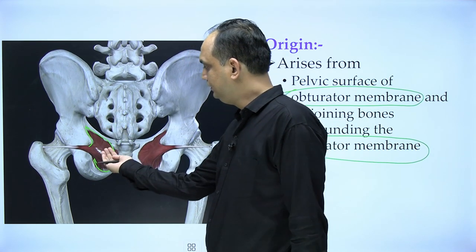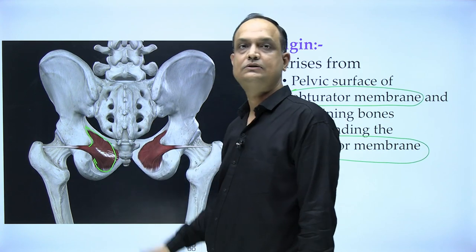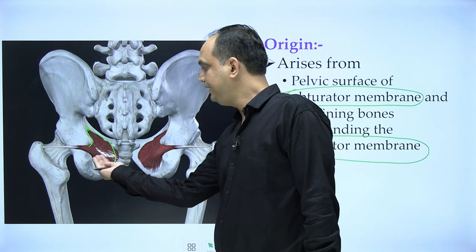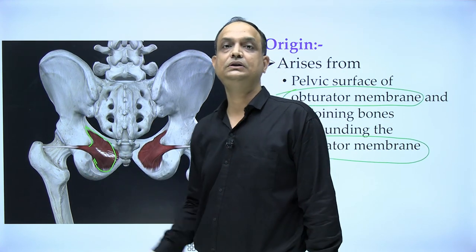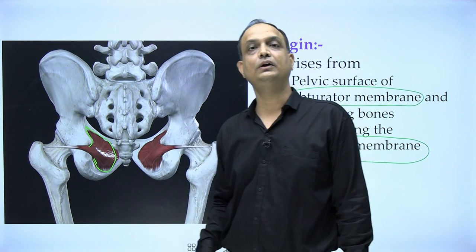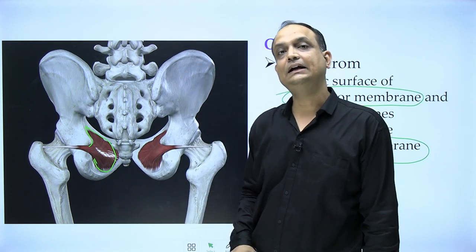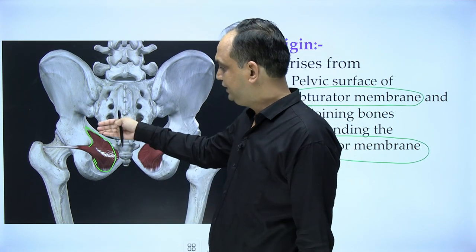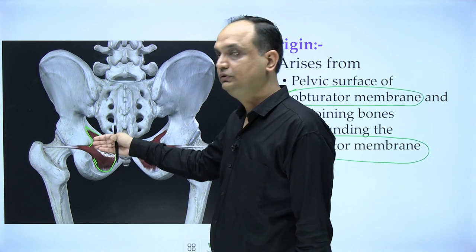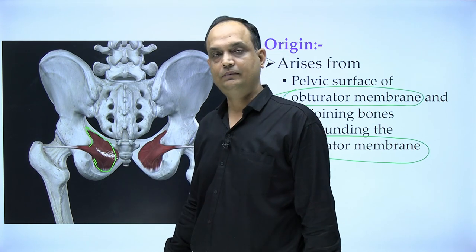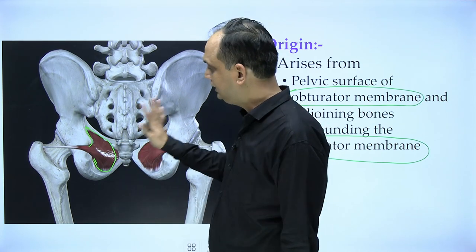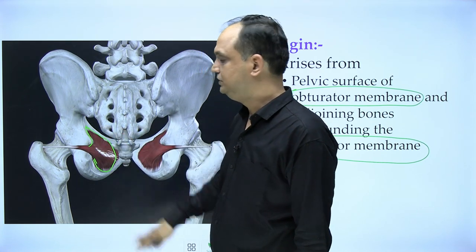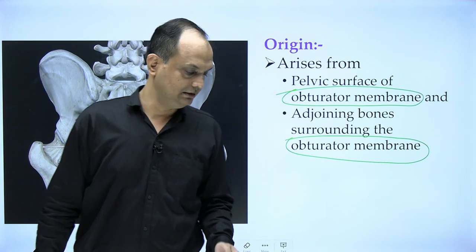If you remove the obturator internus, you will find one membrane closing the obturator foramen — that is your obturator membrane. The obturator membrane closes the obturator foramen, and on that membrane you will have the origin of the obturator internus.